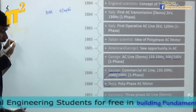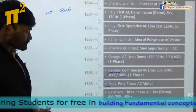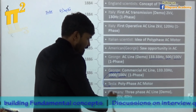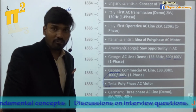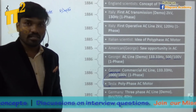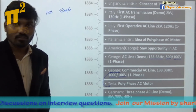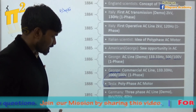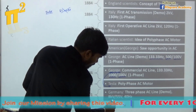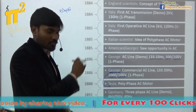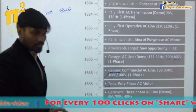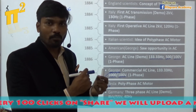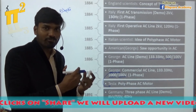In 1891, in Germany, taking all these concepts, they launched a three-phase AC transmission line as a demonstration, transmitting power around 175 km at 8000 volts transmission voltage. The frequency chosen was 40 Hz. They kept on experimenting with different frequencies — which frequency to pick — just experimenting.